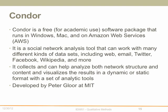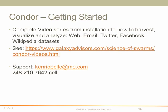Condor, the last of the five software packages, is free for academic use and runs on Windows, Mac, and Amazon Web Services. It is a social network analysis tool that can work with many different kinds of data sets including the web, email, Twitter, Facebook, Wikipedia and more. It collects and helps analyze both network structure and content, and visualizes results in dynamic or static formats with built-in analytic tools. It was developed by Peter Glor at MIT. For getting started, I suggest the complete video series, covering installation on Mac, PC, or Amazon Web Services, showing how to harvest, visualize, and analyze your web, email, Twitter, Facebook, and Wikipedia data sets. For support, contact Ken Ryipel at KenRyipel@me.com.